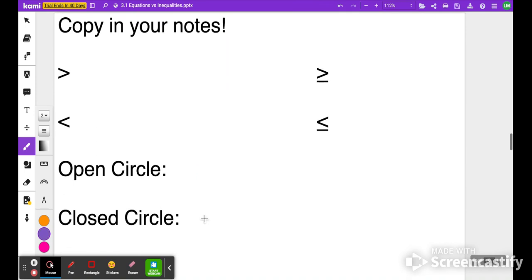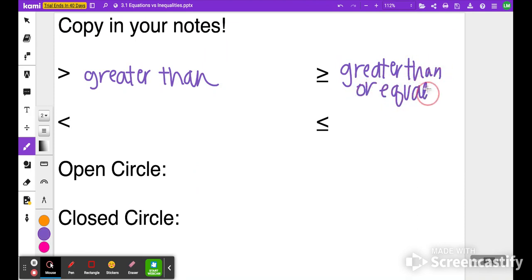We want to make sure we know what each of these look like. The way that we read this symbol is called greater than. When the greater than symbol has a line underneath it, this will be called greater than or equal to. So we would say this is x is greater than 2 or x is greater than or equal to.